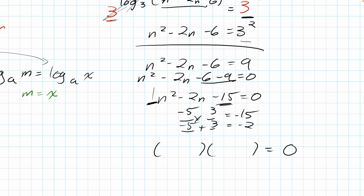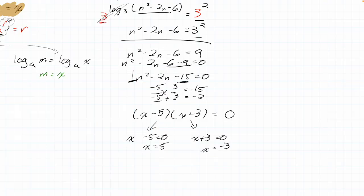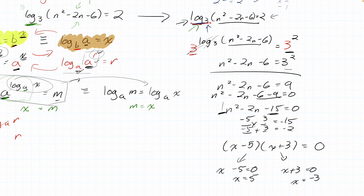Since the coefficient of n² is 1, we don't need to decompose — we can factor directly: (n − 5)(n + 3) = 0. Setting each factor to zero: n − 5 = 0 gives n = 5, and n + 3 = 0 gives n = −3. We do some quadratics at the end, but really the key part was the log rules.